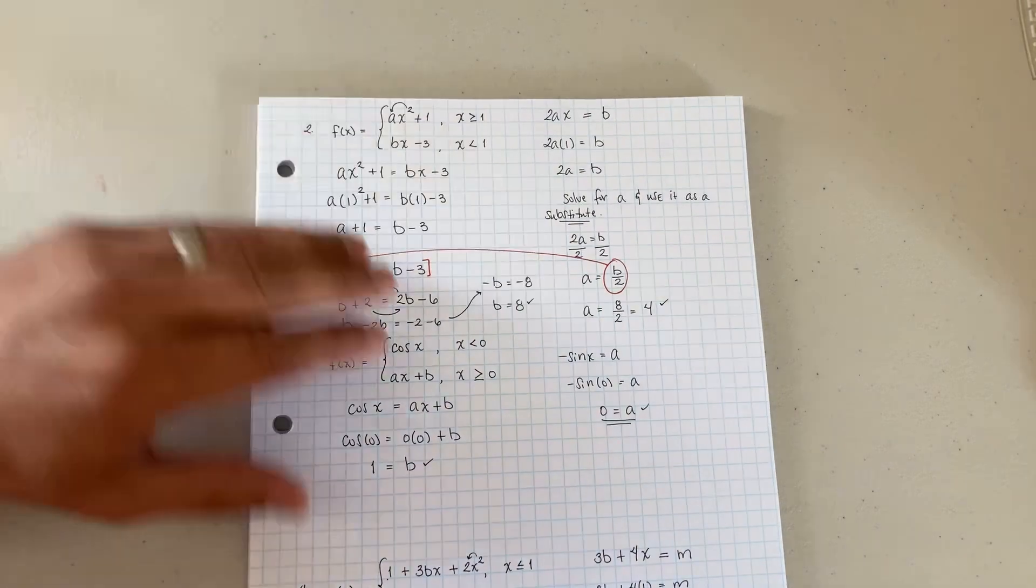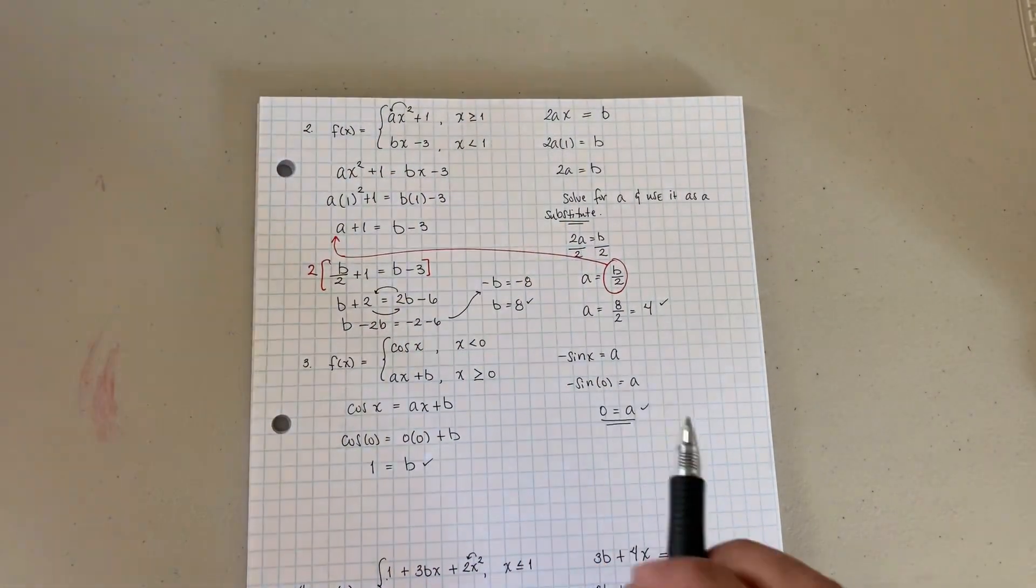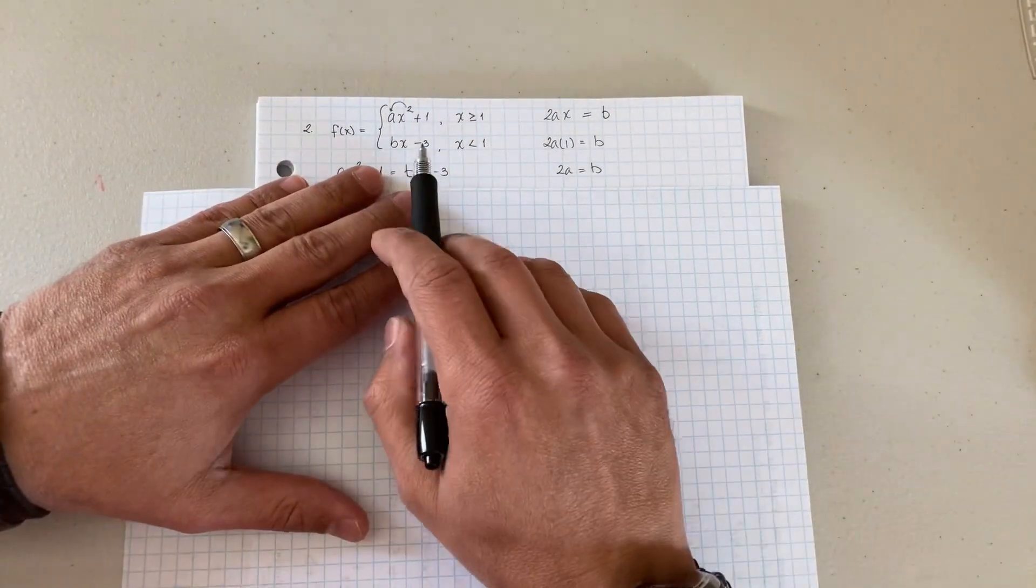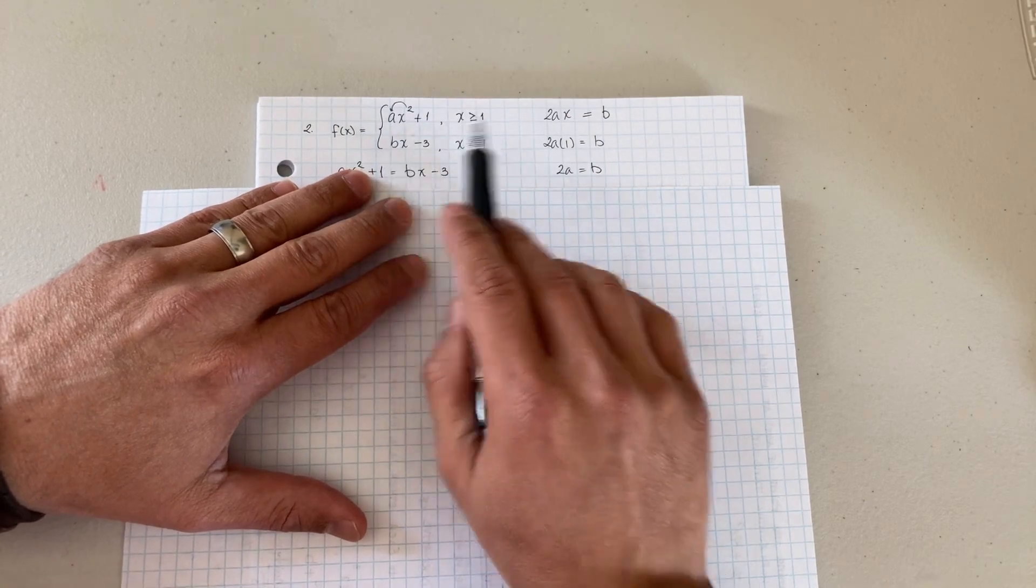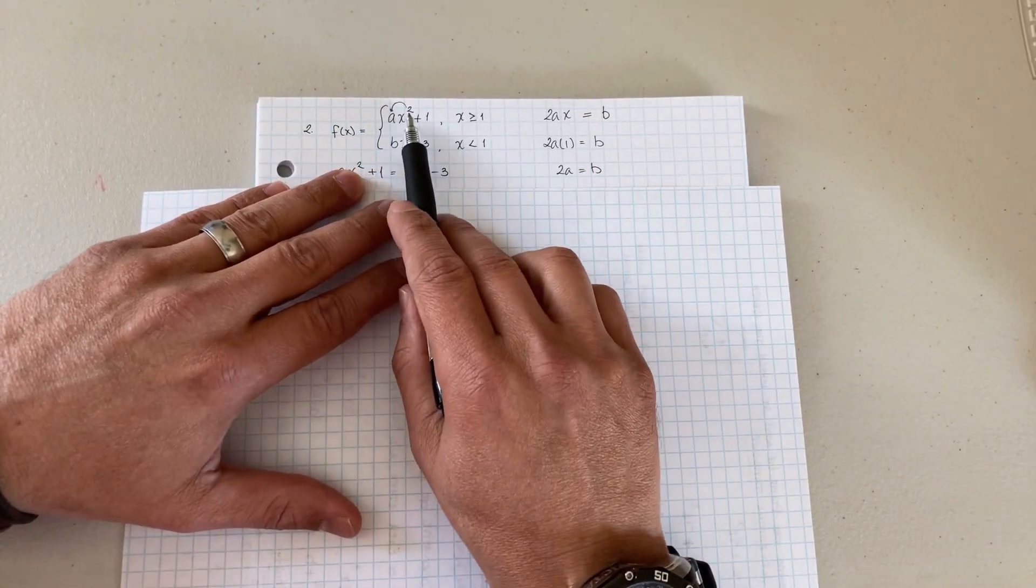Let me show you another one. Same thing over here. Maybe I should do this first. Same thing, find values of a and b that'll make it differentiable. So we take the derivative.